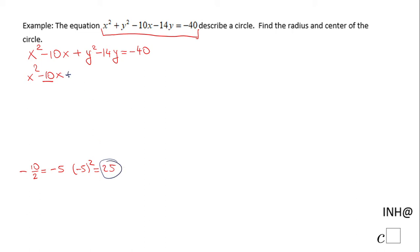And then we're gonna move to the y terms, y squared minus 14y, and we're gonna do the same process. That negative 14 divided by 2, that is negative 7, and we can square this negative 7.